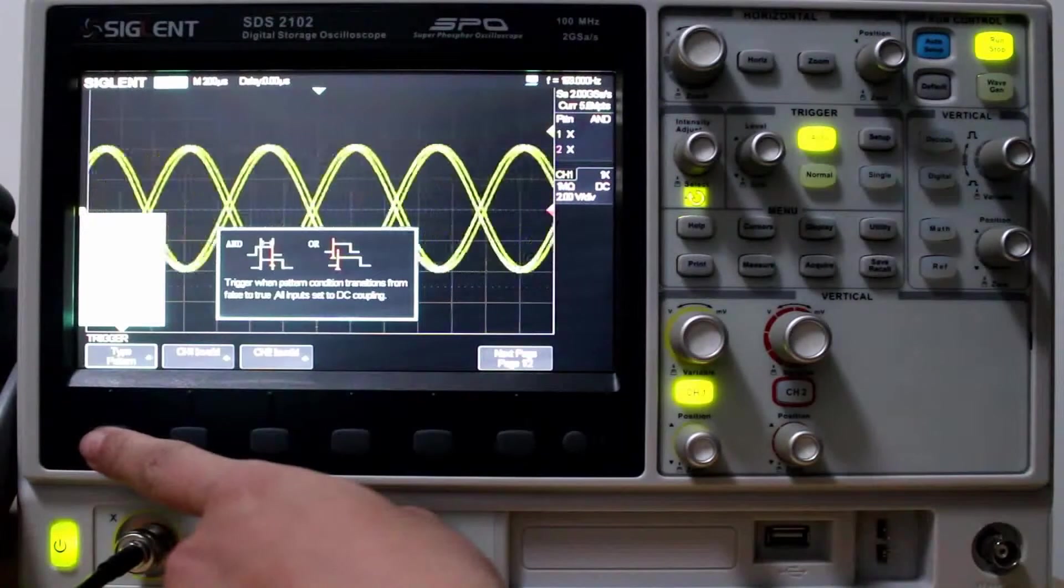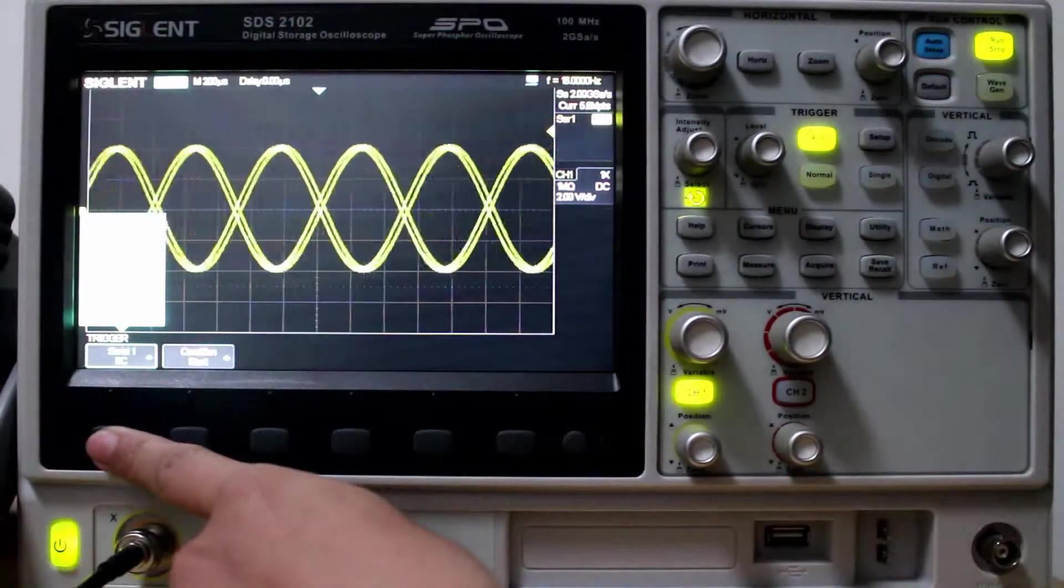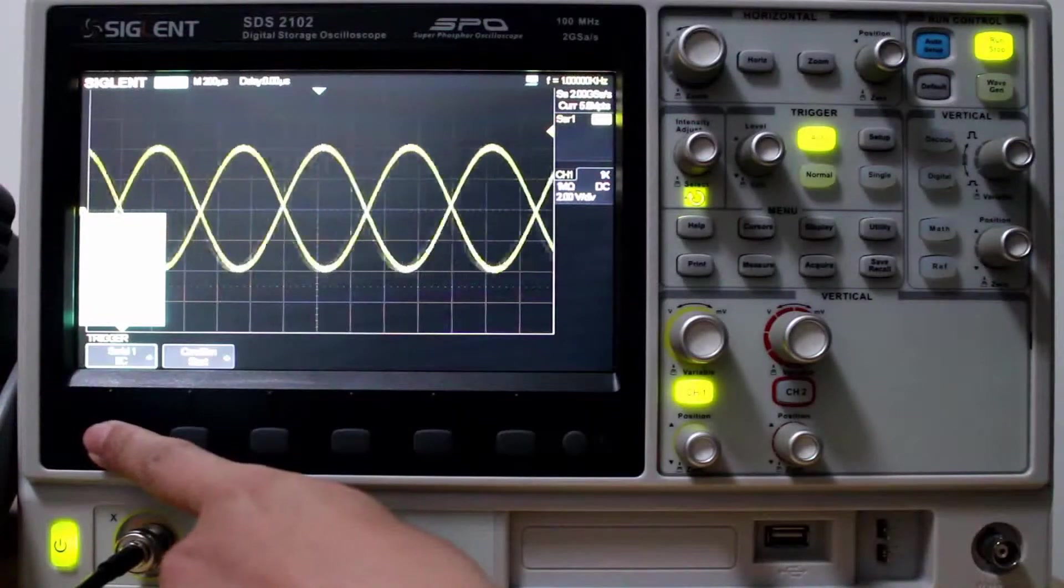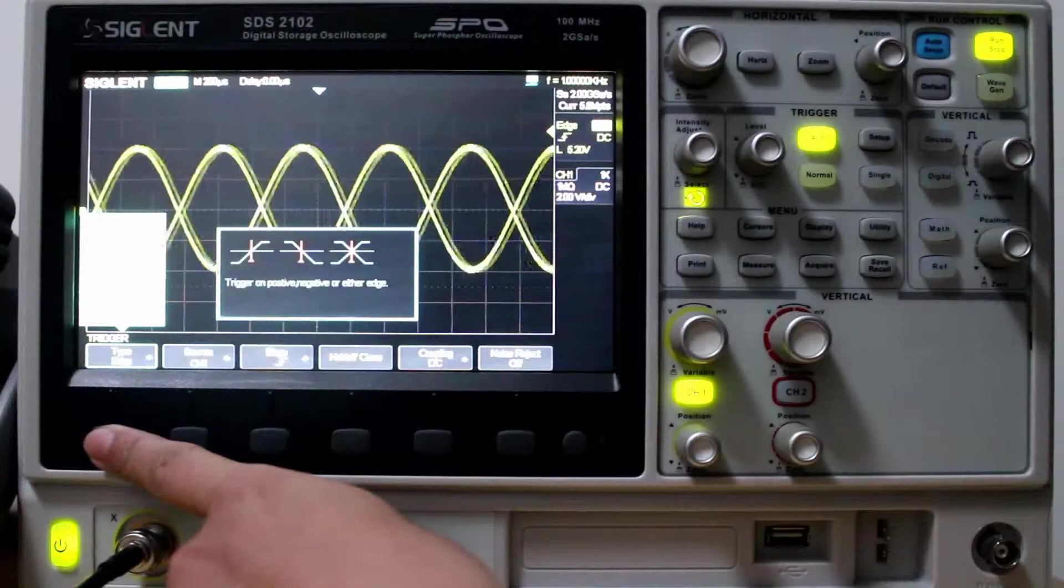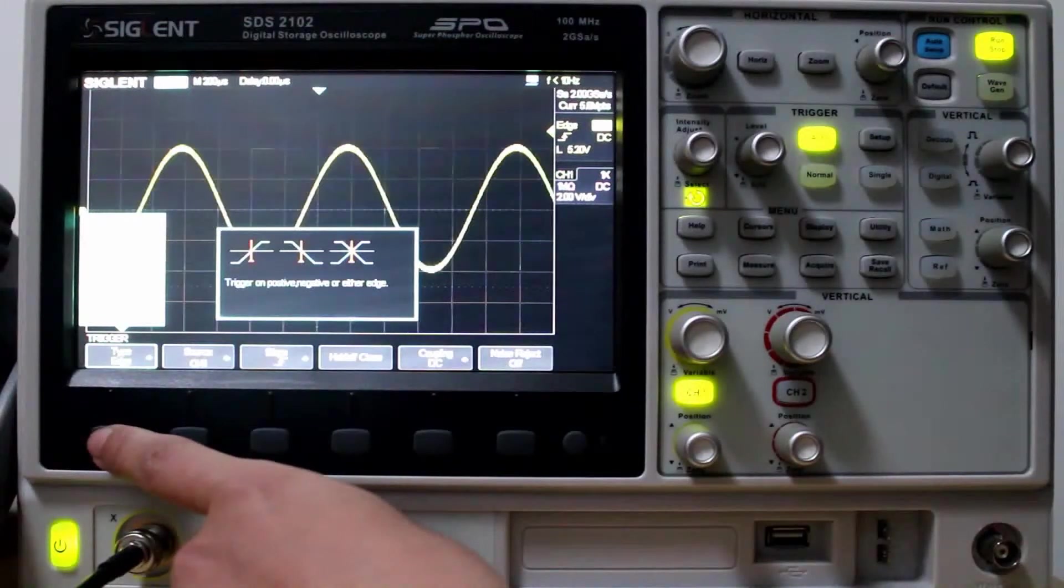That's nine different trigger types. And then we have Serial 1, that's IIC, and Serial 2, SPI. So nine trigger types and two serial types.